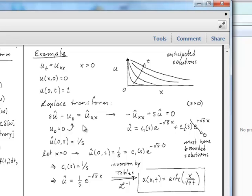So now we just have an ODE. We also have to transform our boundary condition in this case. And that gives us 1 over s, right? So the Laplace transform of 1 is 1 over s. And so solving this equation, we have basically an exponential with the square root of s as our exponent coefficient up here.